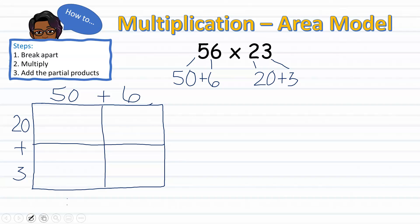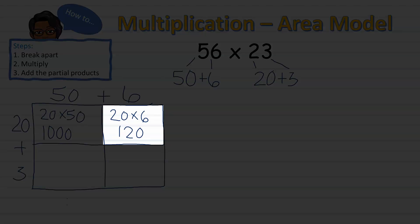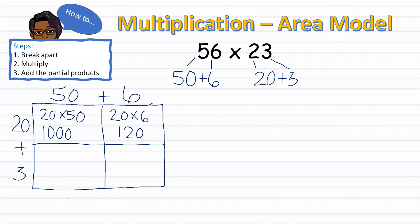Now I am set to multiply. I will begin by multiplying 20 by 50 and 20 by 6. When assisting your child in using this strategy, it is important to remind them to write their answers in the corresponding box. 20 times 50 will go in this box, 20 times 6 in this box. Now I'm ready to move on to multiplying 3 by 50 and 6.